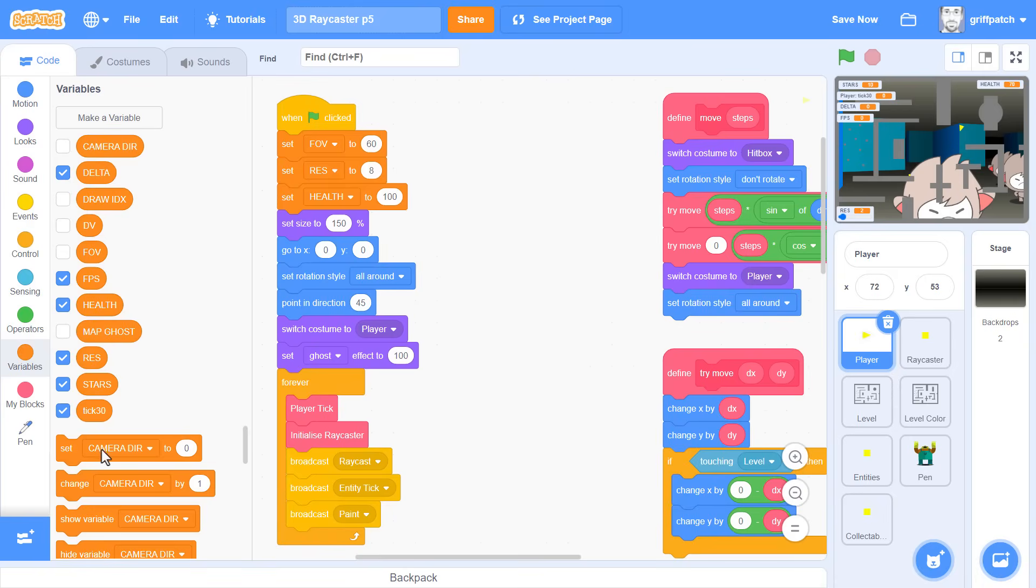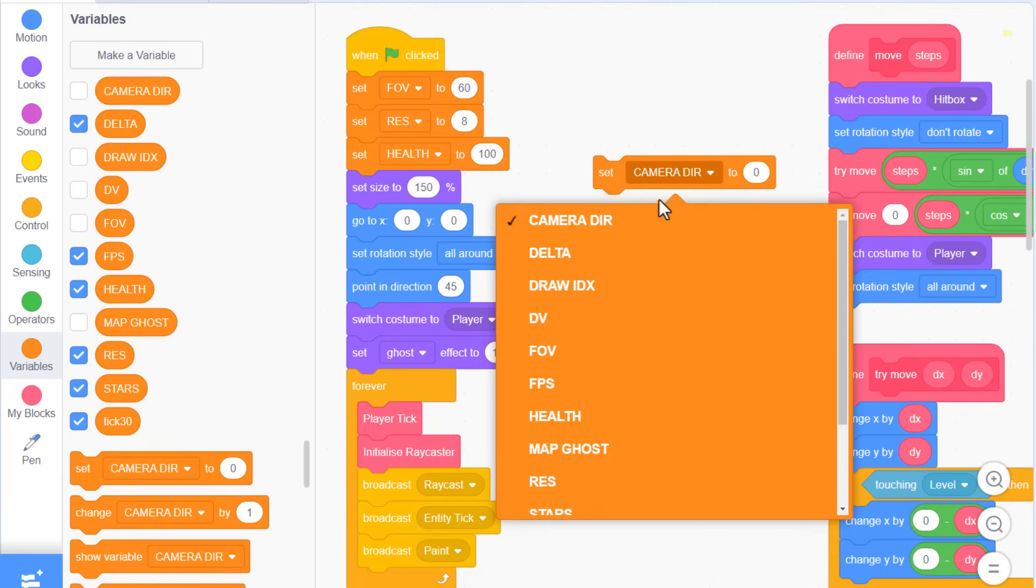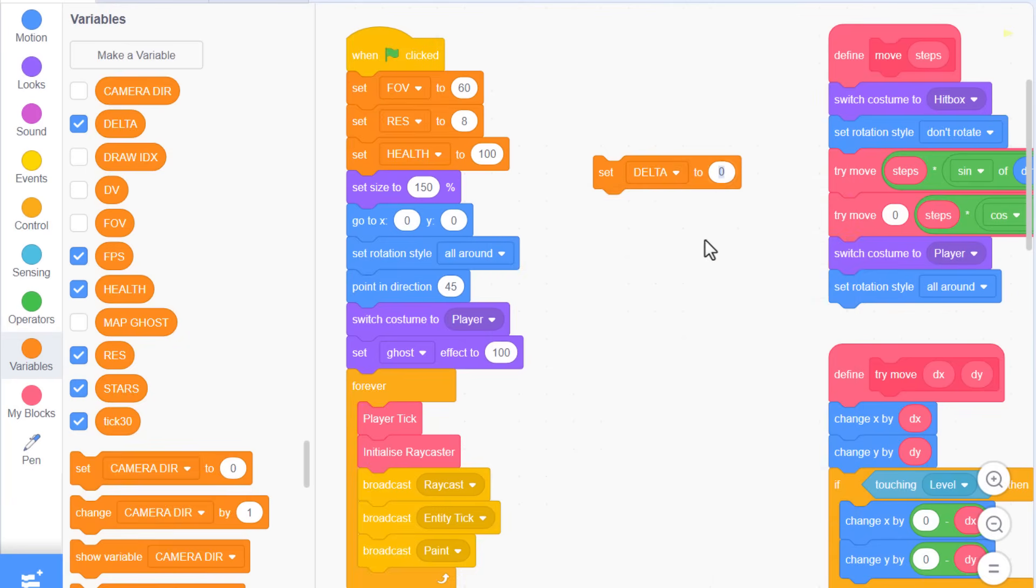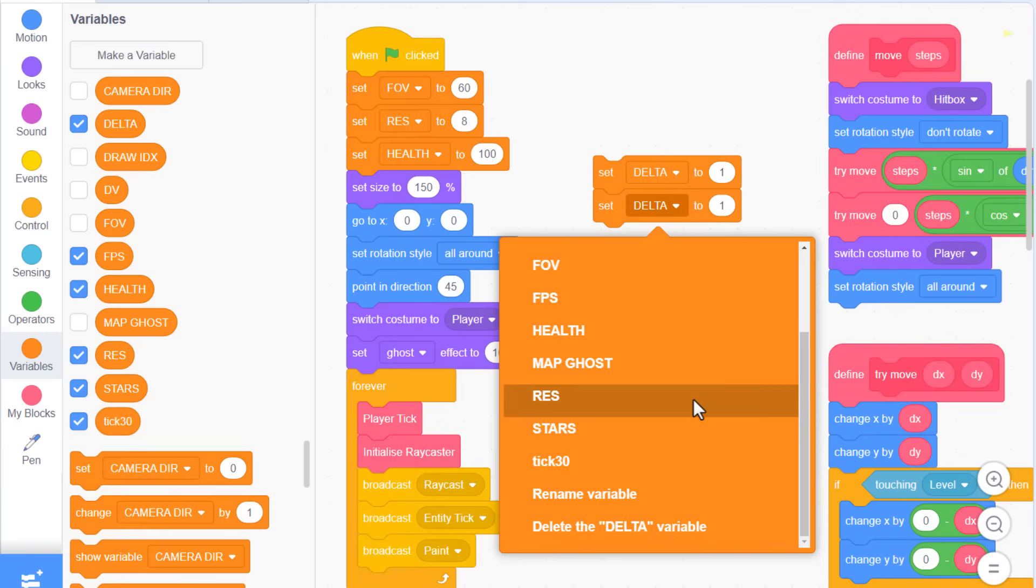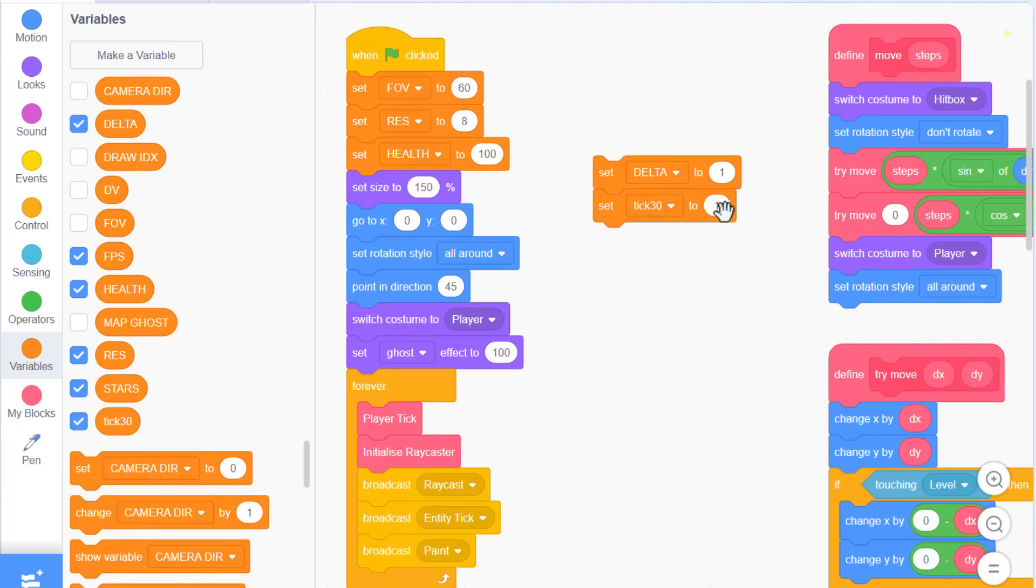We need to initialise these values. Setting delta to 1 and set tick 30 to 0. That's the start time. Just pop these in under the initial green flag script.